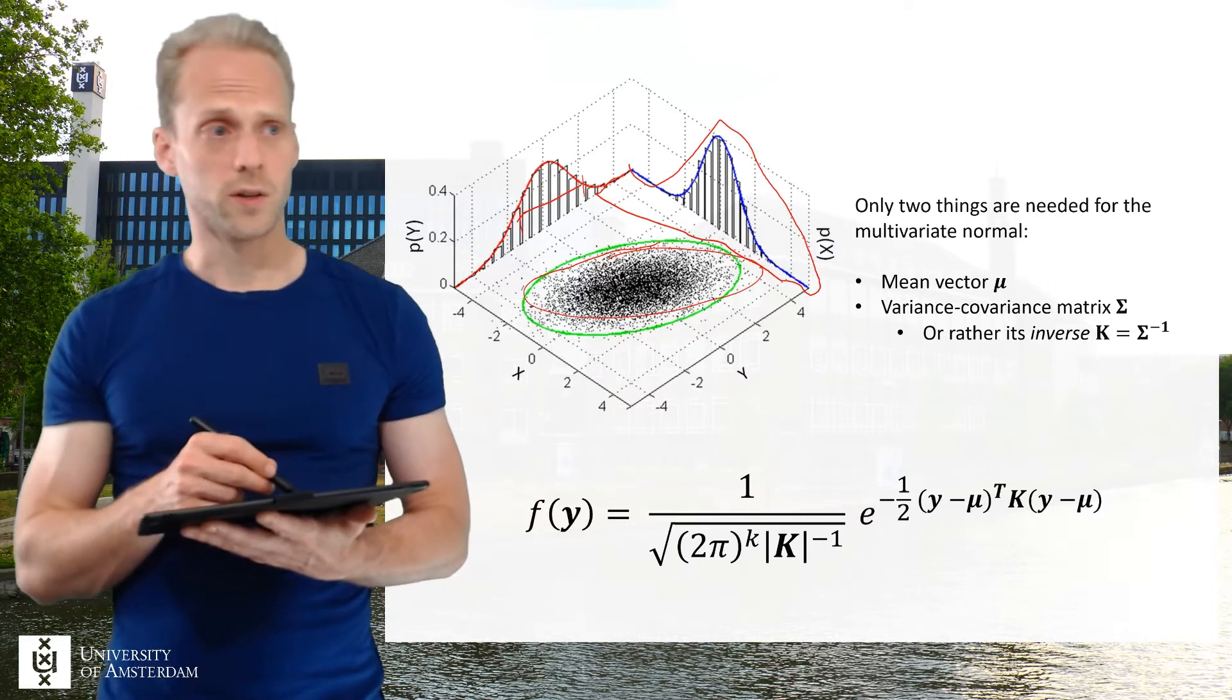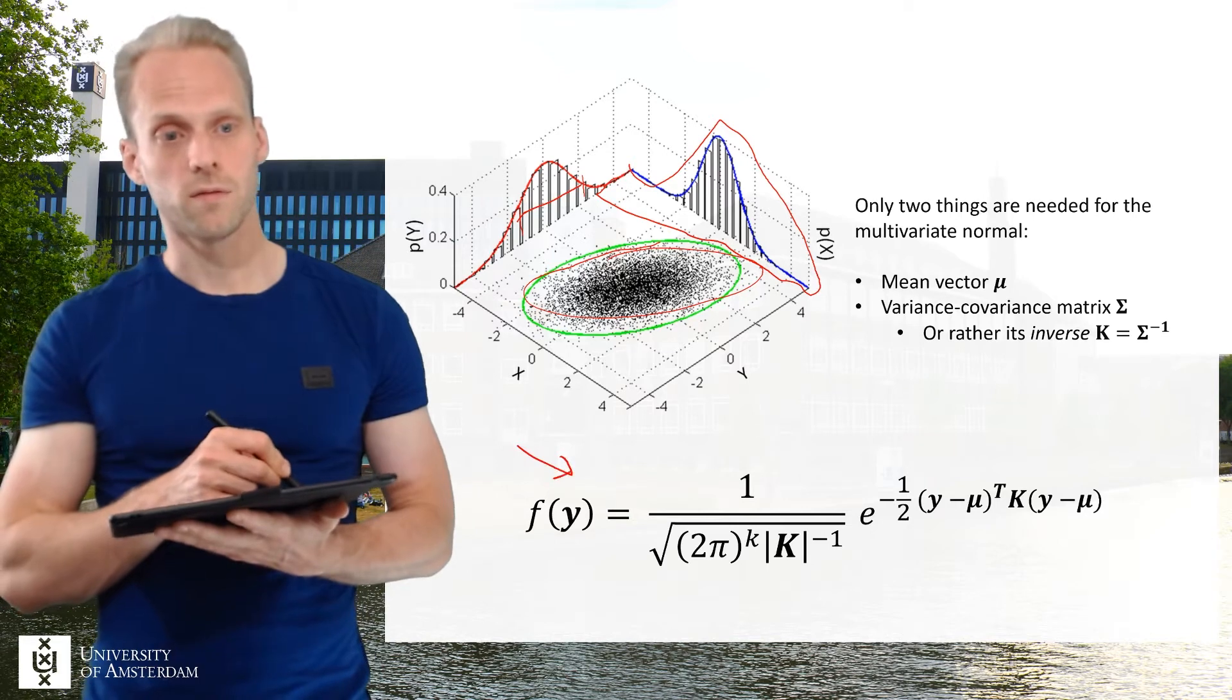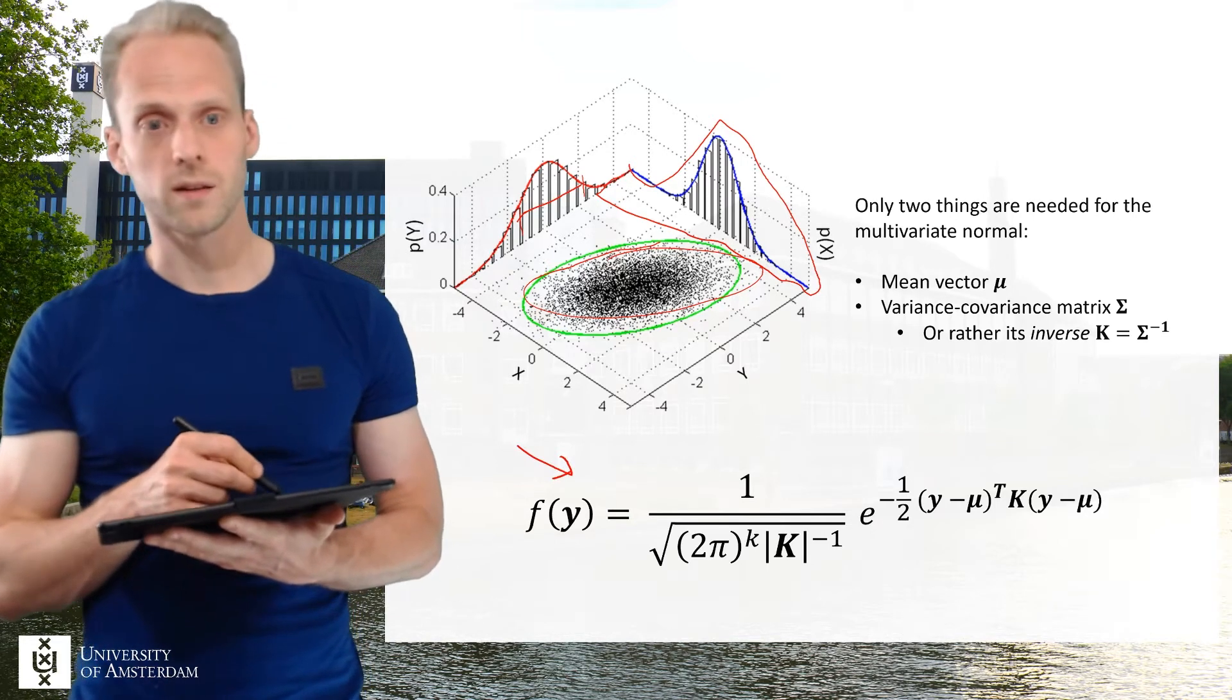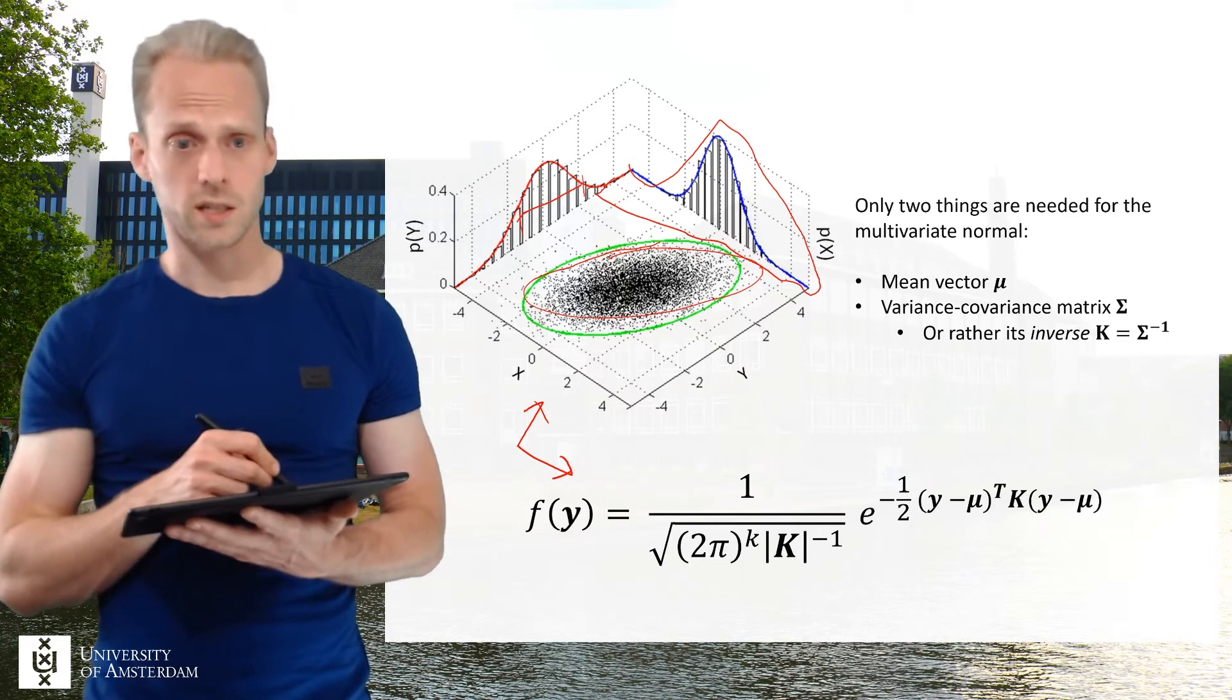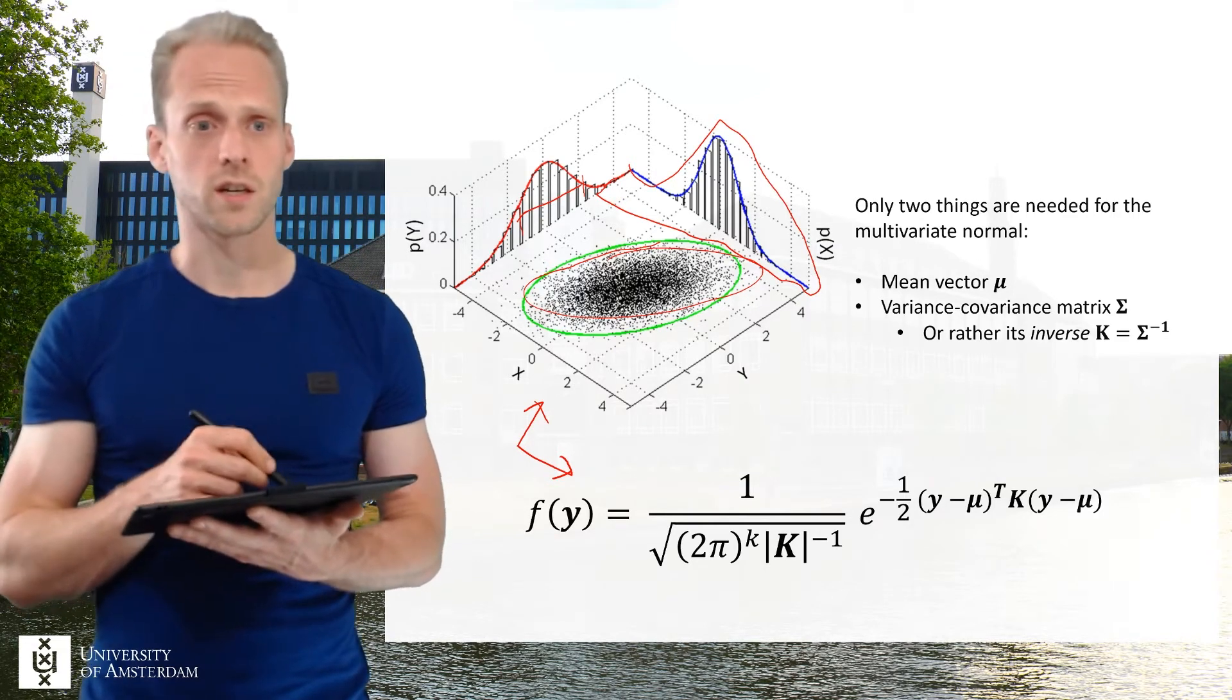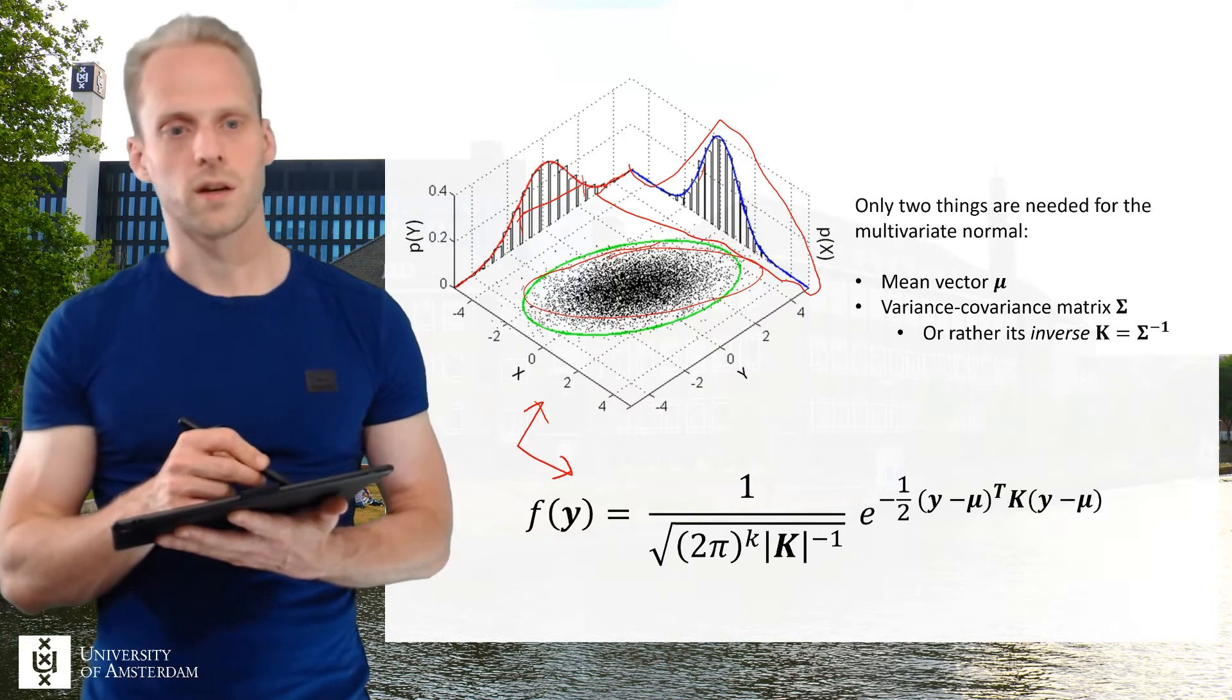Now the multivariate normal distribution has this shape which I copied from Wikipedia. Also this picture I copied from Wikipedia. And this is the density distribution which gives us basically the height of this curve at any point.